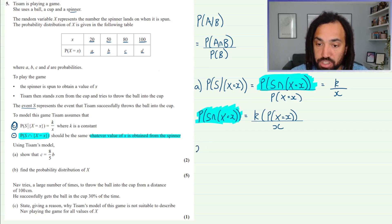So let's see what happens when we choose X equals 20. Well, what do we get on this right-hand side here when X is 20? We get K and the probability that X equals 20 is A, so we have A on top and that's all over X itself which is 20.